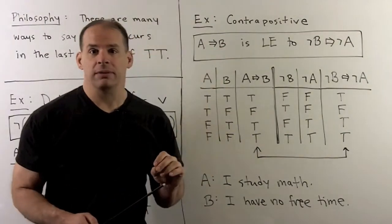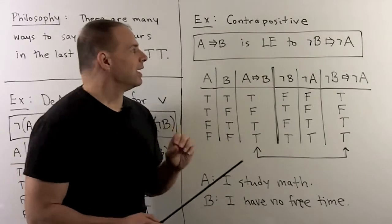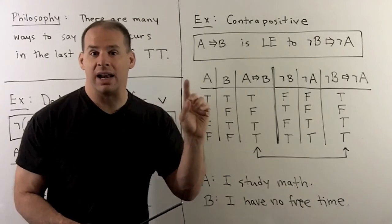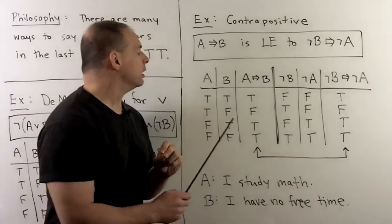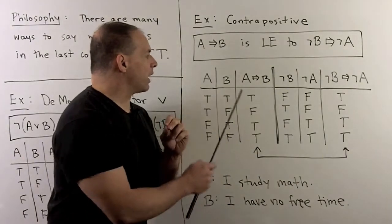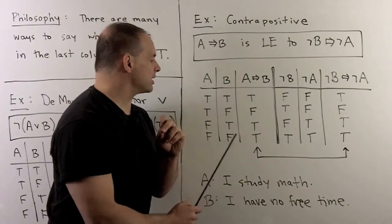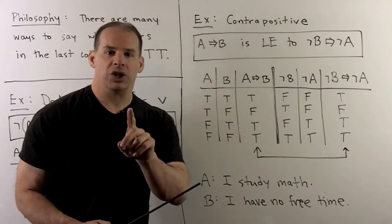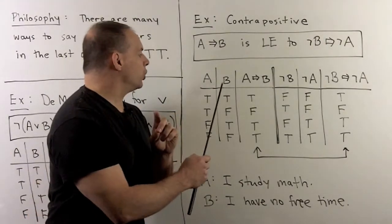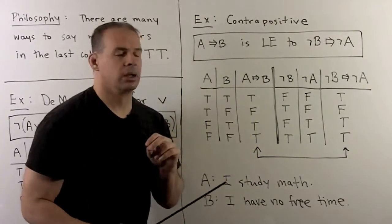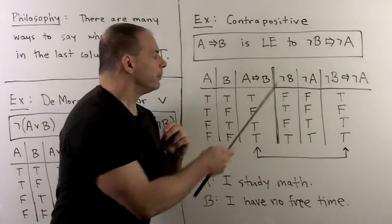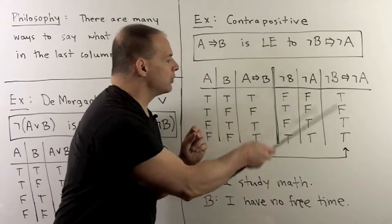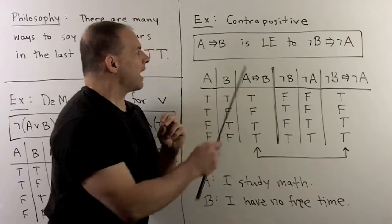For the contrapositive: if I have A implies B, that is logically equivalent to not-B implies not-A. Let's check with the truth table. For A implies B, we have TRUE in all cases except where A is TRUE and B is FALSE. Working out not-B and not-A, then computing not-B implies not-A, we see that the truth tables are equal, so we have logical equivalence.